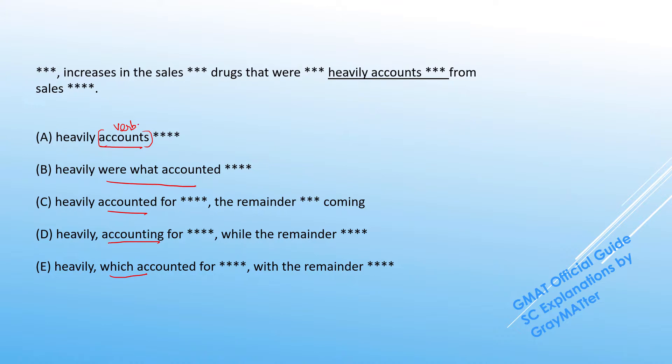But what we can see is that there is a prepositional phrase as a subject, and we have to be very careful with prepositional phrases because test takers could get easily distracted by the number of nouns present in the prepositional phrase itself. We have drugs here, we have sales here, and we have increases here.